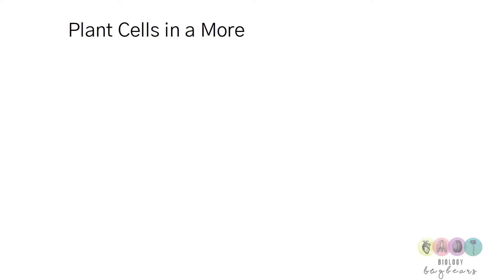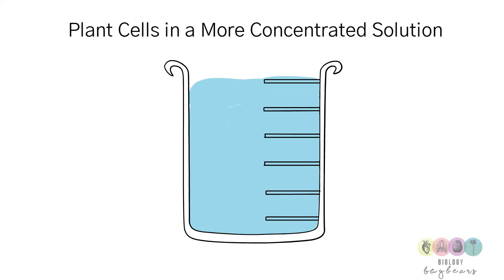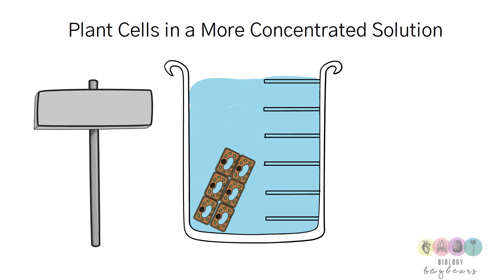So what happens when plant cells are placed in a more concentrated solution? So imagine a beaker of very salty or very sugary water. Water is going to move from where there's lots of it inside the cell to where there's less of it into the solution in the beaker, so water leaves the cell.